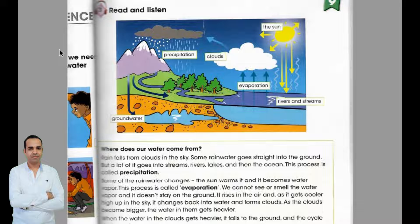Some of the rain water changes. The sun warms it, and it becomes water vapor. This process is called evaporation. We cannot see or smell the water vapor, and it doesn't stay on the ground. It rises in the air, and, as it gets cooler high up in the sky, it changes back into water and forms clouds.